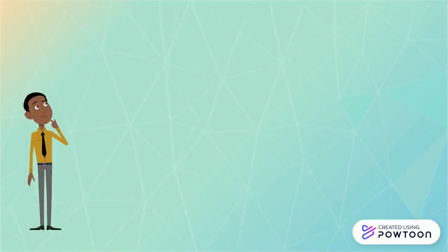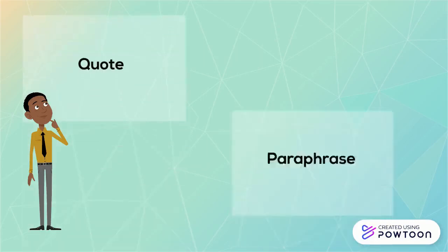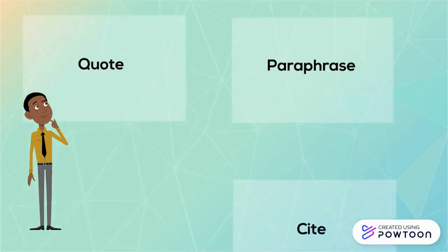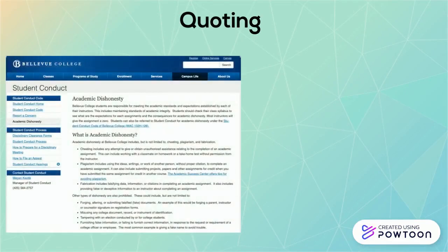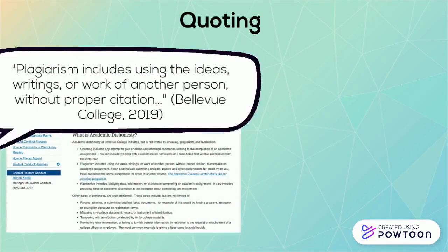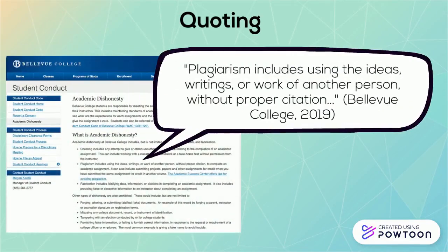Ways to safely use ideas from your sources include quoting, paraphrasing, and citing. Quoting a source is using a phrase or sentence exactly as you read it. To quote in a paper, you add quotation marks around this material, then include an in-text citation and a full citation in your references list.